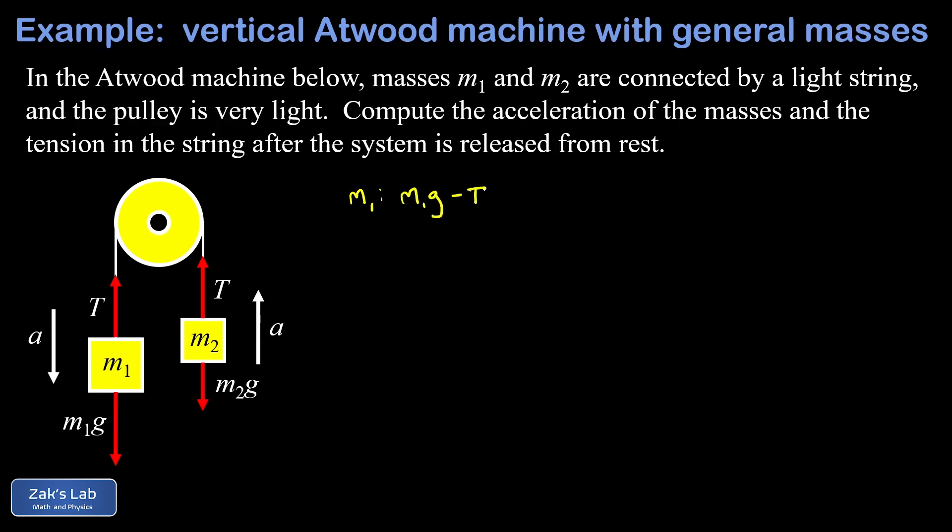That's equal to the mass m1 times the acceleration. Next we analyze m2. For m2, we're imagining that it accelerates upward so we count upward as positive. T is our positive term here: T minus m2g equals the mass m2 times the acceleration a. We're looking at a system of two equations and two unknowns where the unknowns are tension and acceleration.